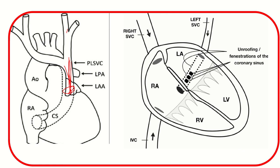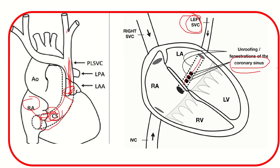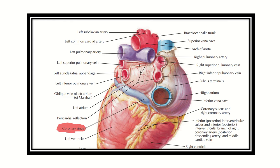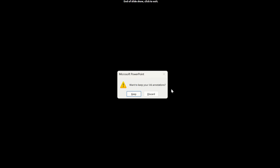From this left superior vena cava, we can see it drains into the right atrium. Here we can see 'CS' — this vein labeled CS is the coronary sinus. So the left-sided superior vena cava drains its blood through this coronary sinus. Here is another picture of the left-sided superior vena cava, and we can see it drains through the coronary sinus. The coronary sinus is the main venous drainage of the heart itself, and through this coronary sinus it brings blood to the right atrium.